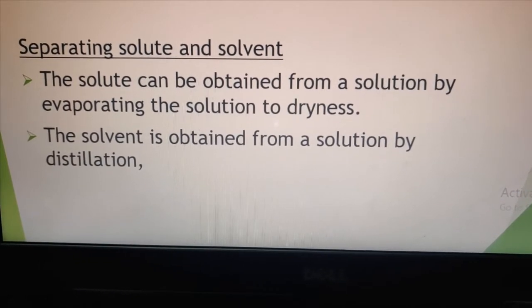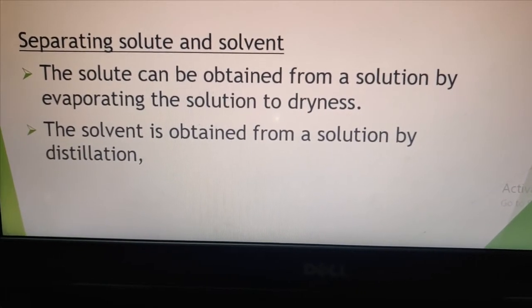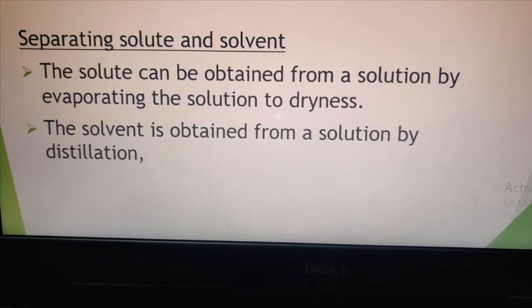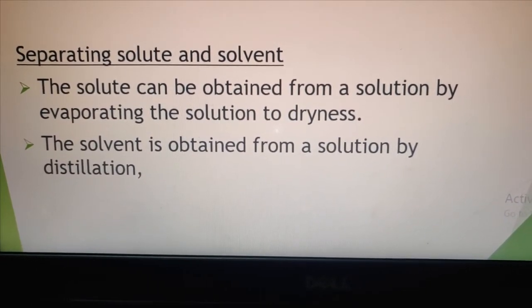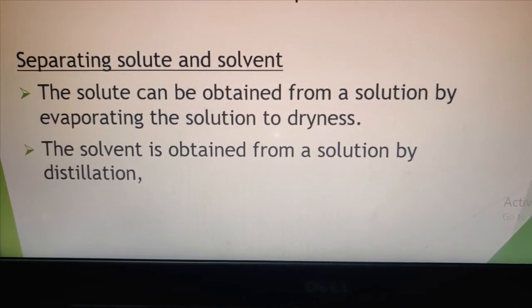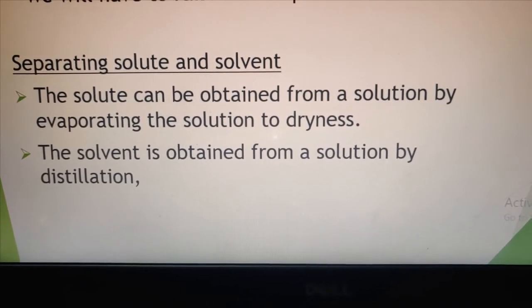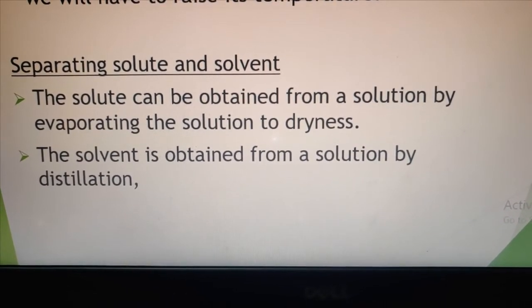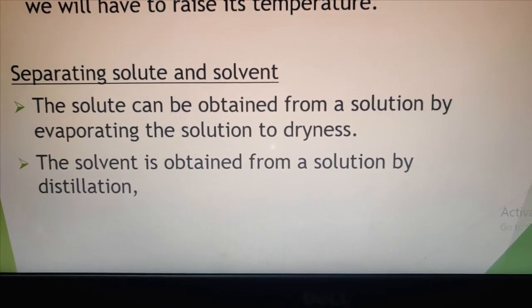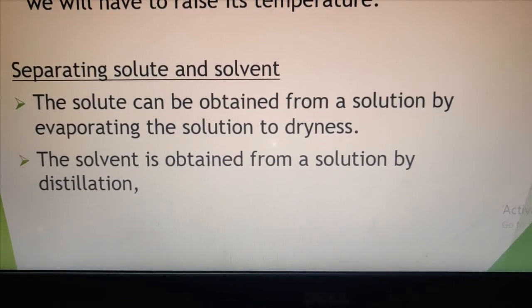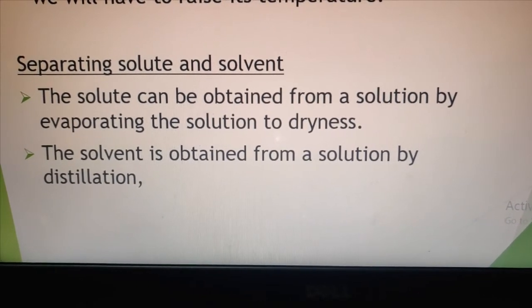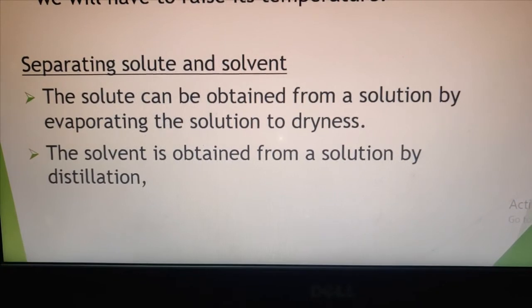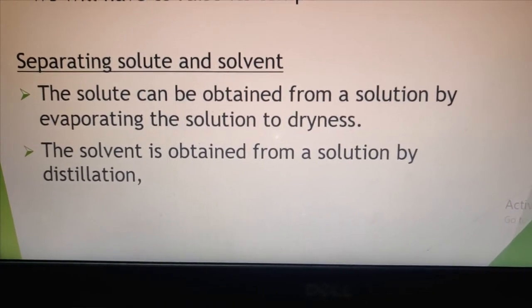If we want to obtain the solvent—the water—we can use distillation. Distillation is a process where the solution is first heated, then the heated water vapor is taken into a condenser where the liquid is condensed. The condensed liquid is collected in another flask. That is how we obtain the solvent from a solution.